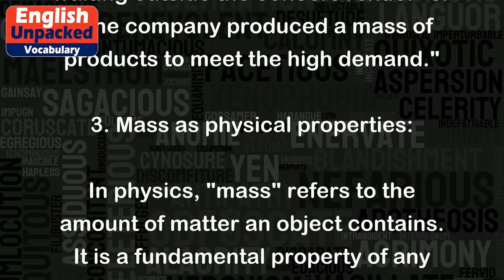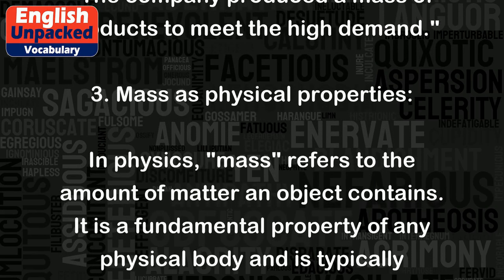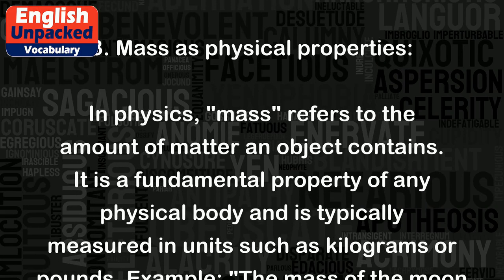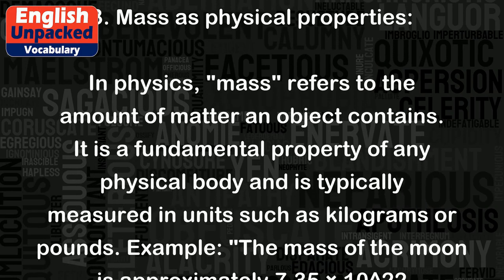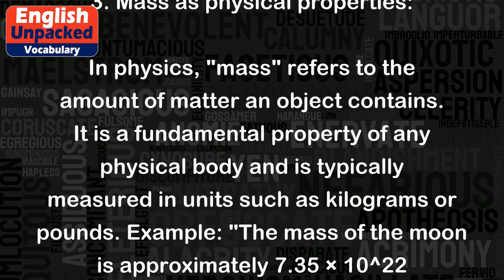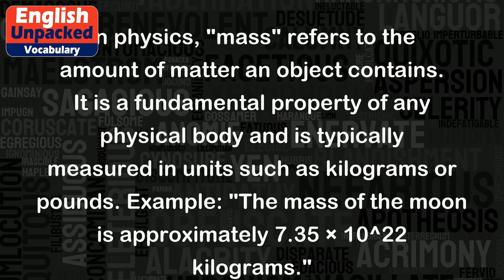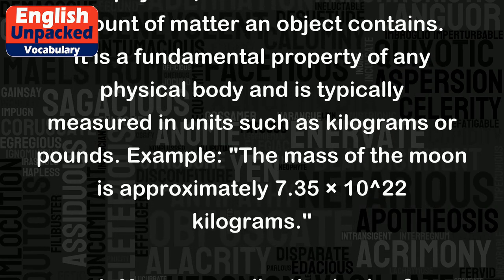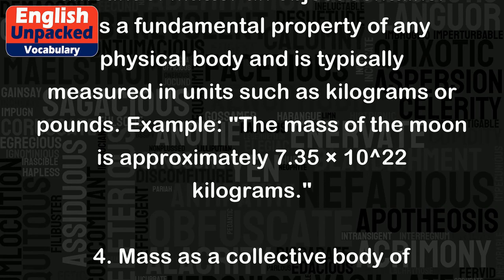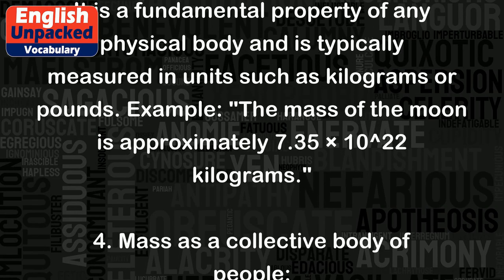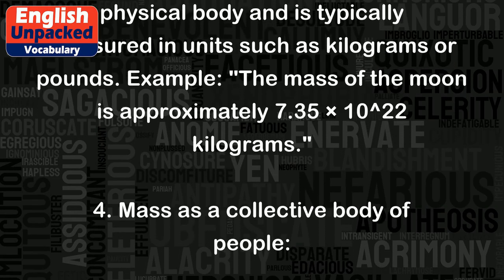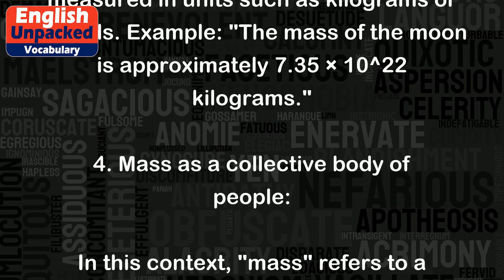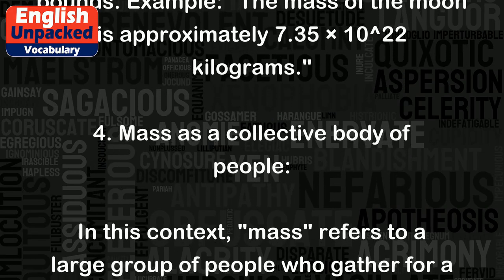Mass as physical properties: in physics, mass refers to the amount of matter an object contains. It is a fundamental property of any physical body and is typically measured in units such as kilograms or pounds. Example: The mass of the moon is approximately 7.35 times 10 to the 22 kilograms.